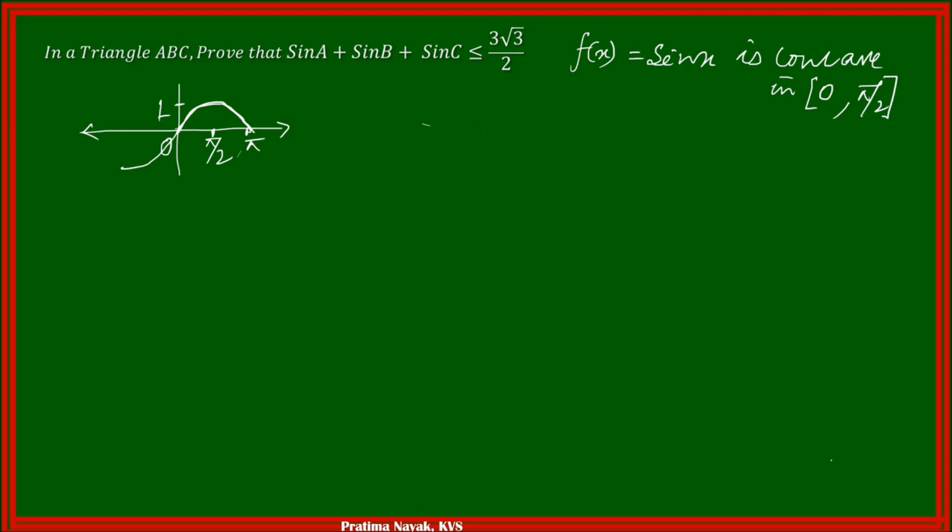So I can apply Jensen's inequality. For a concave function, f of x1 plus f of x2 up to f of xn divided by n is less than or equal to f of x1 plus x2 up to xn over n. That means the arithmetic mean is less than or equal to the function of the mean.